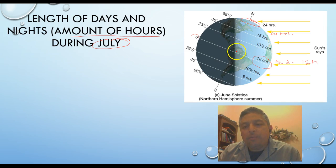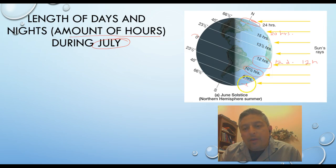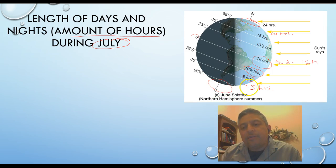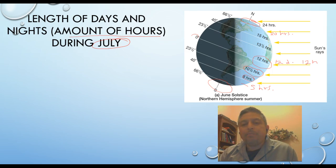But look what happens as you move from the equator down to the south, to the South Pole. Notice that the amount of hours of daylight is actually decreasing — from 12 hours it went down to 10 and a half, then 9 hours. And probably between these two white lines, about 5 hours of daylight. And then over here, 0 hours — there will be no daylight throughout this time. This is actually going to last for about 3 months.